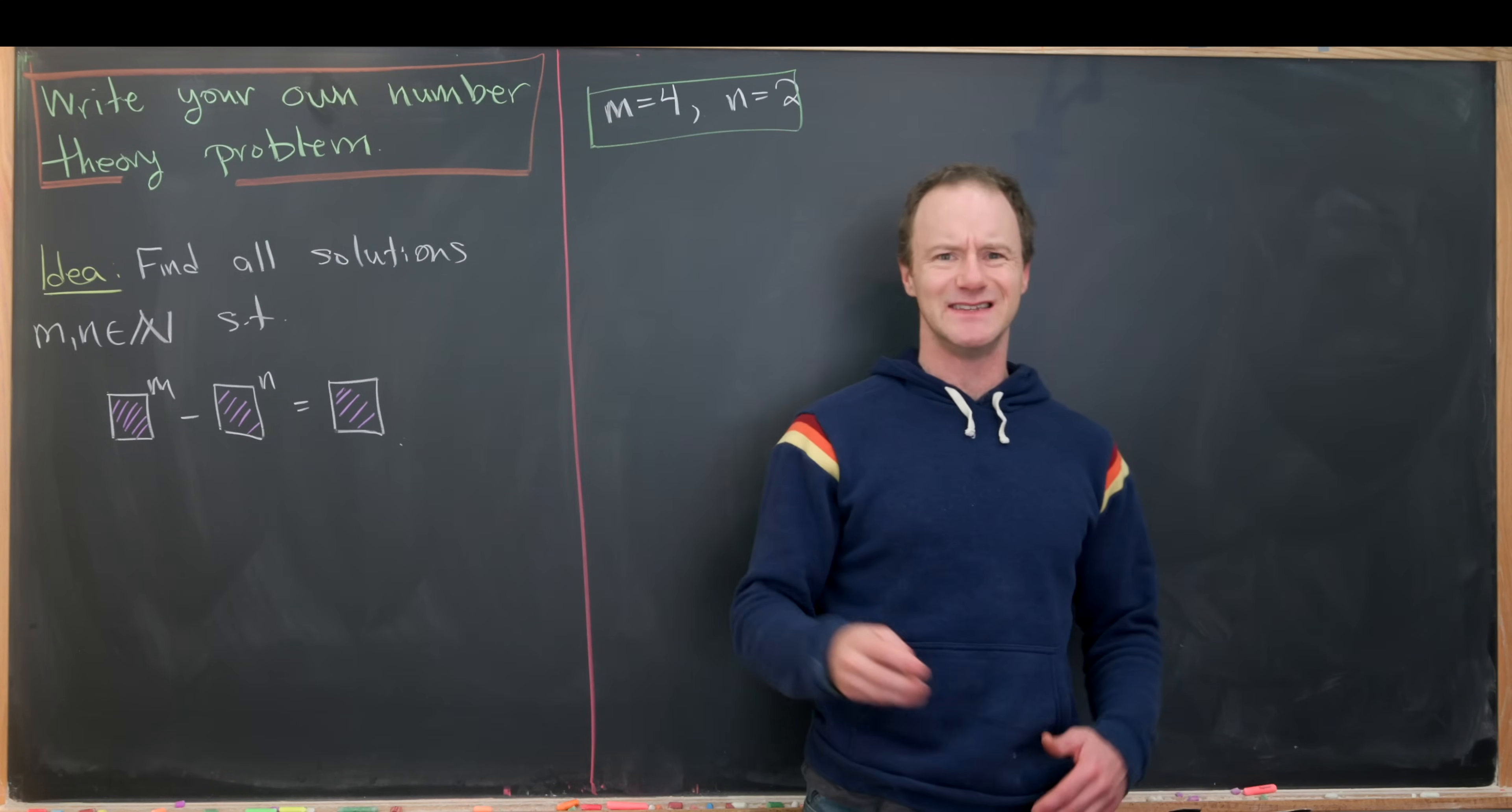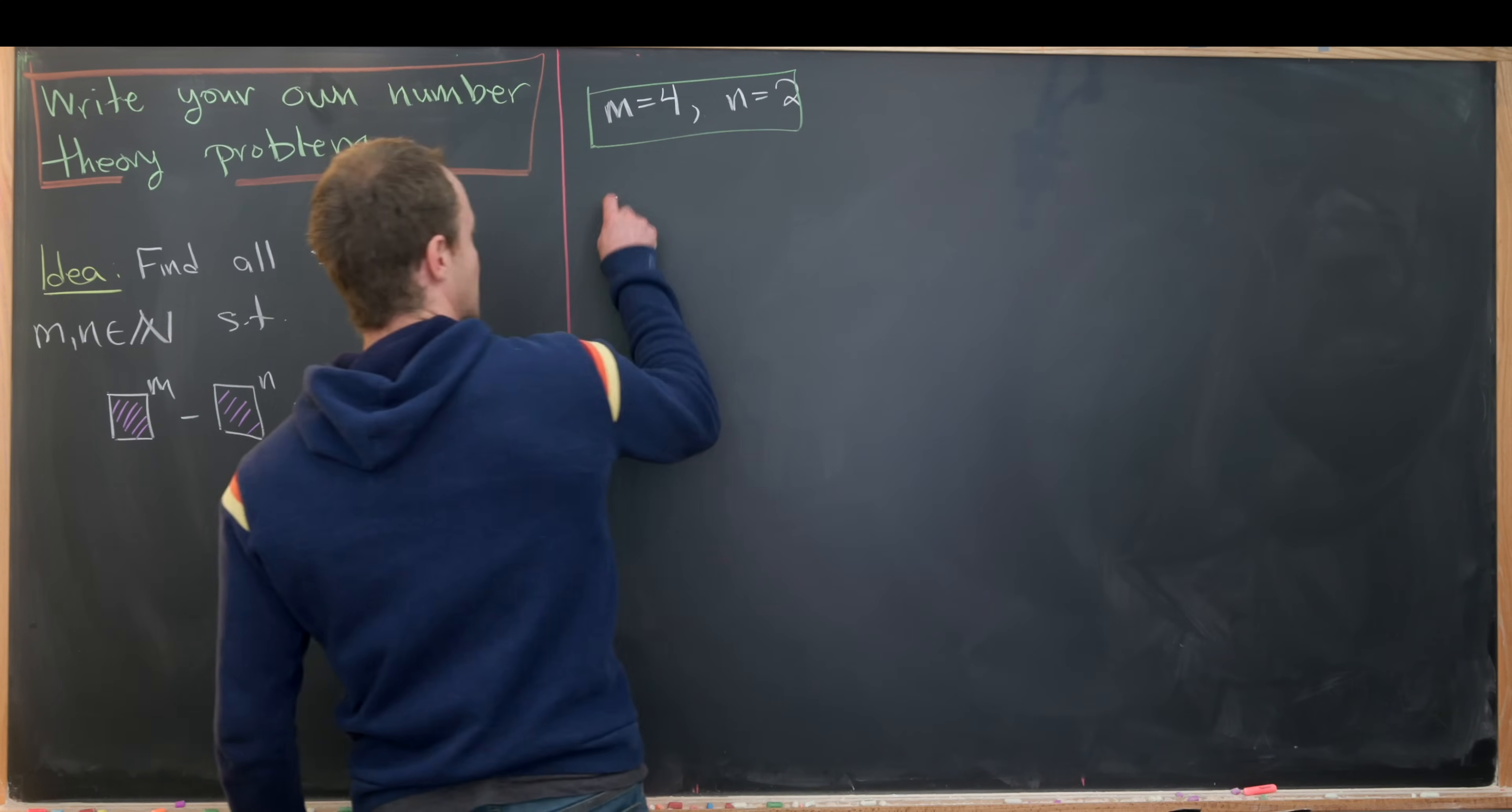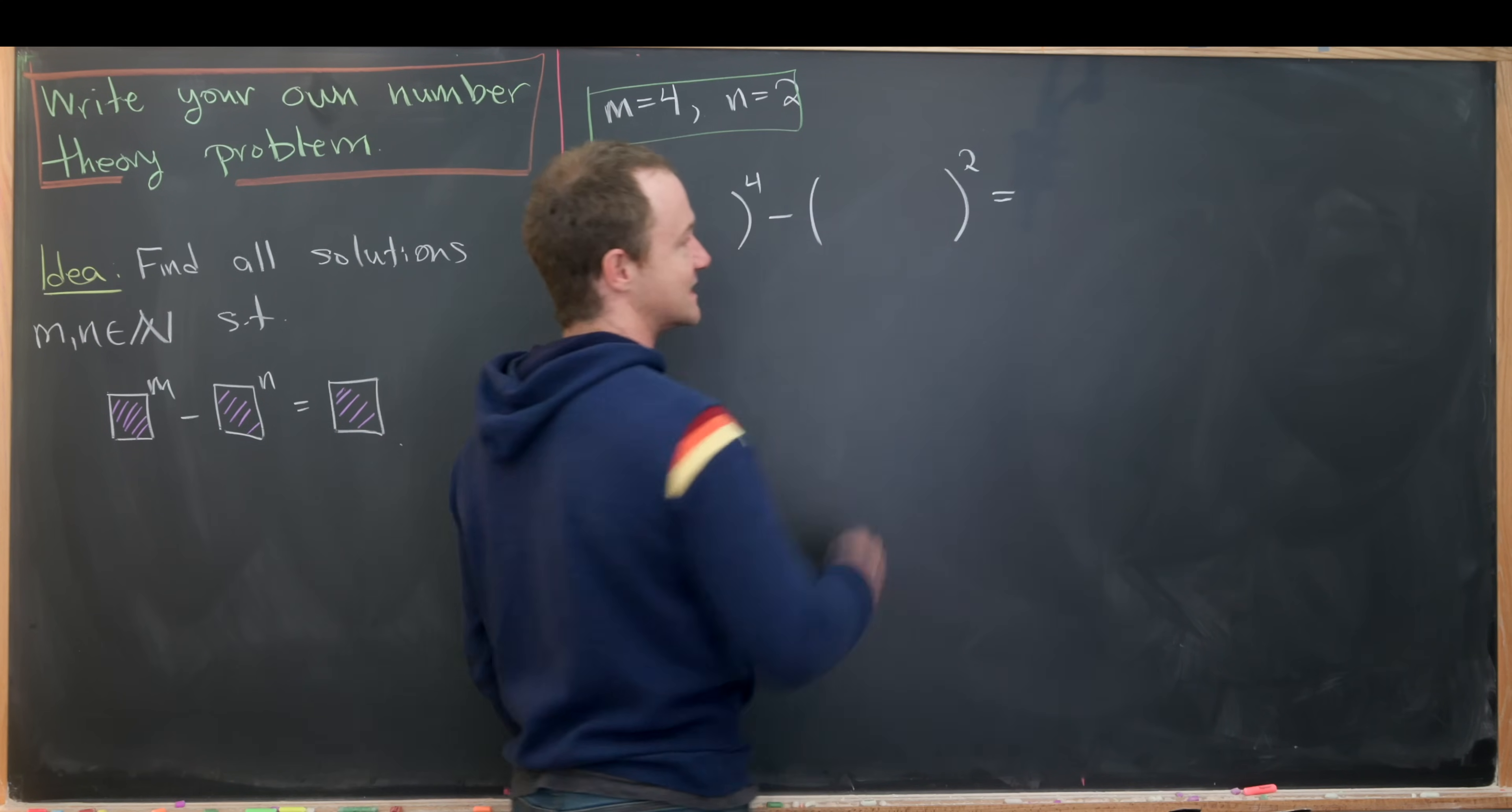You're not guaranteed to have a nice problem in choosing anything, but this is the one I've worked out ahead of time so that we end up with a nice problem. That means we're going to take something to the fourth power and subtract something else squared and see what we get.